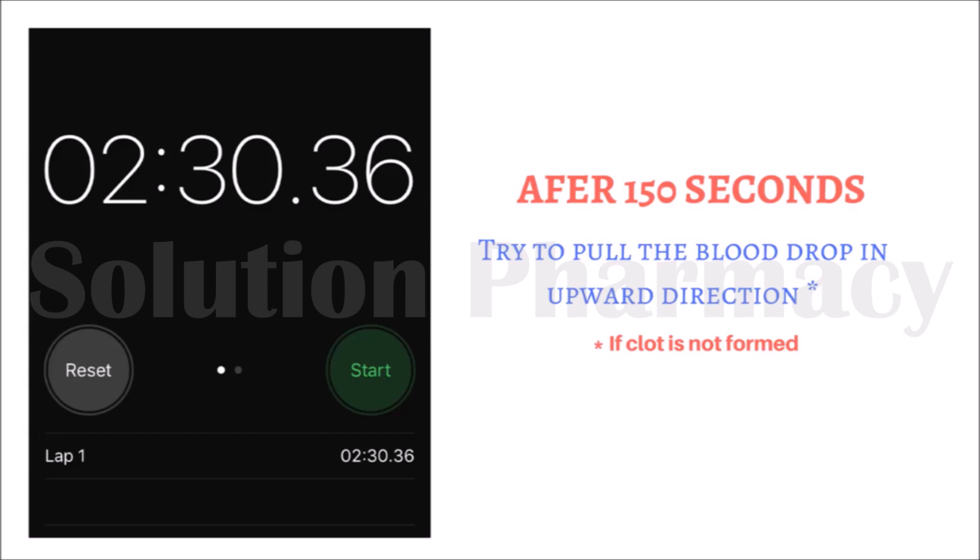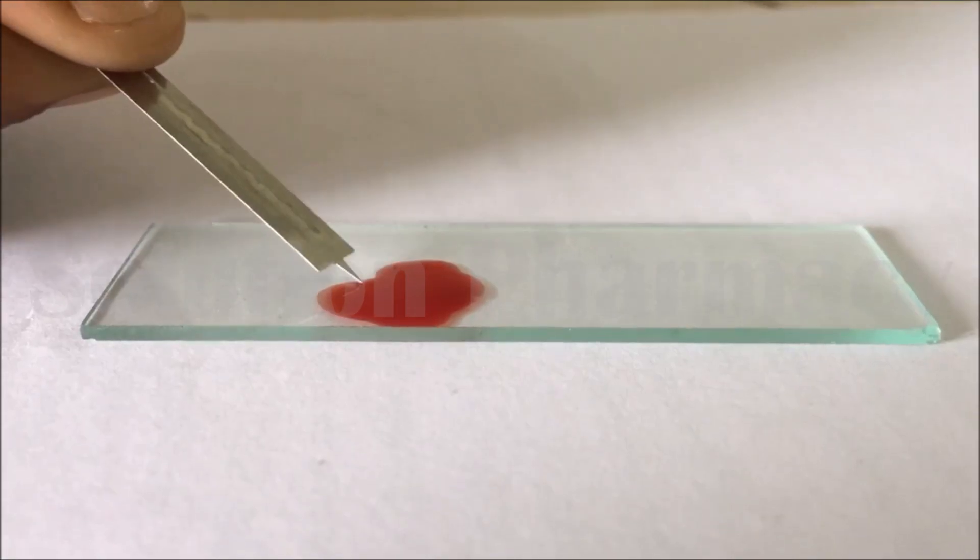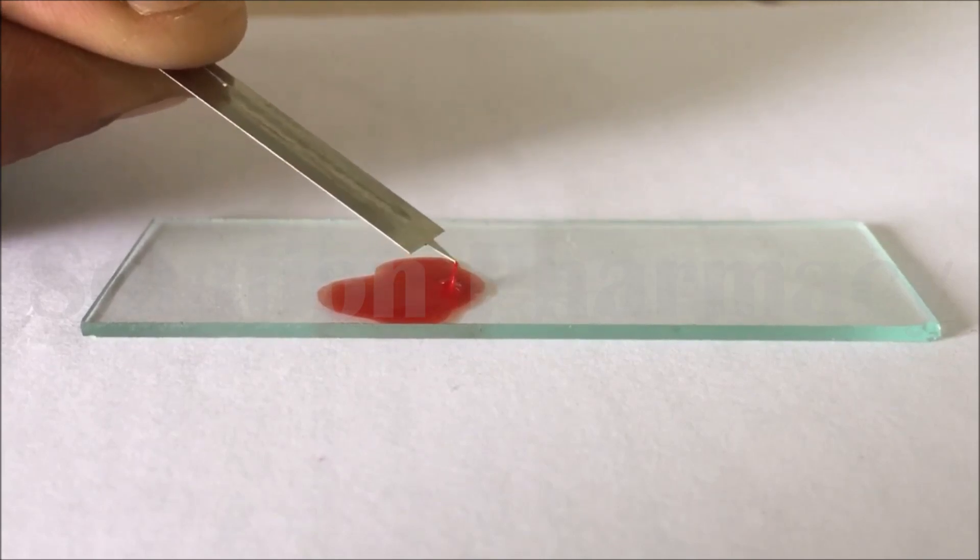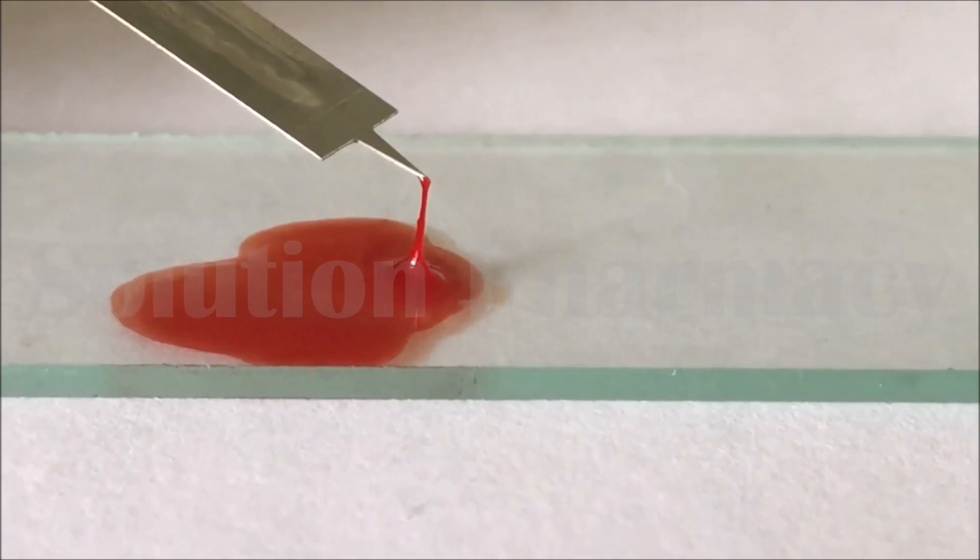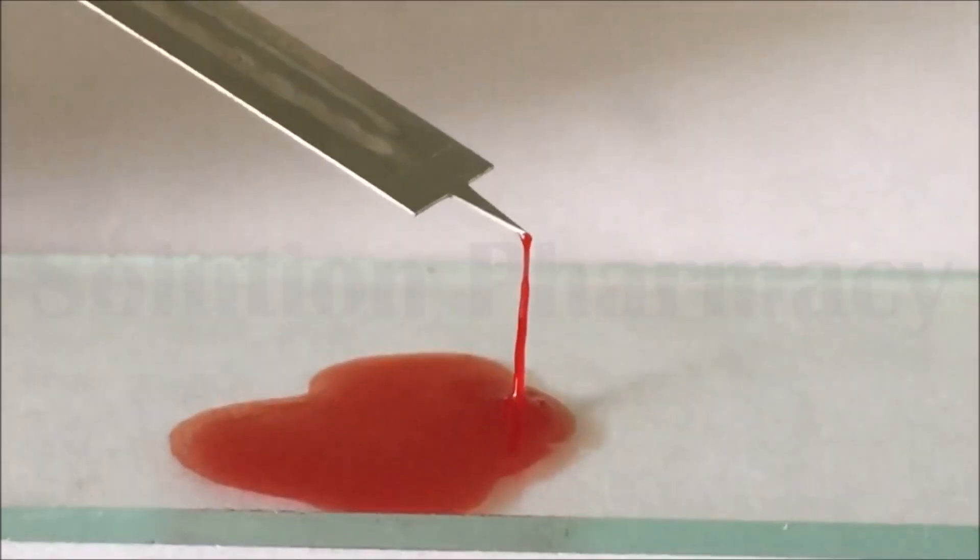Finally after 150 seconds, again repeat the same process. Try to pull the blood drop on the slide with the help of lancet tip. Pull upward slowly. You can see here fine thread, that is fibrin thread of the clotted blood.